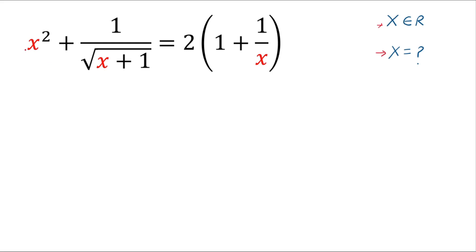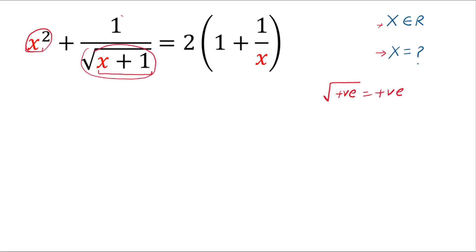Look carefully at the left hand side. Here x squared: if x is negative then x squared is positive, and if x is positive then x squared is also positive. So it means x squared is positive. Now for real solutions, x plus 1 must be positive, and since square root of a positive number is always positive, this expression is positive. The numerator is 1, so the whole fraction part is positive. With two positive terms, the left hand side is positive.